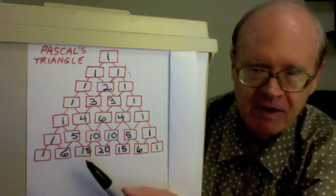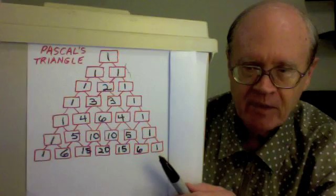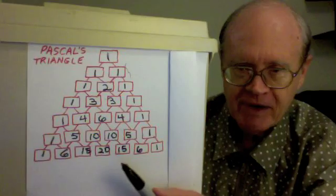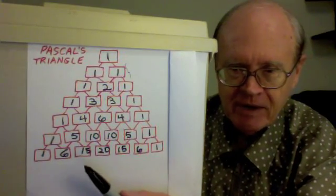For example, one, six, fifteen, twenty, fifteen, six, one, that's left to right. Right to left, one, six, fifteen, twenty, fifteen, six, one.